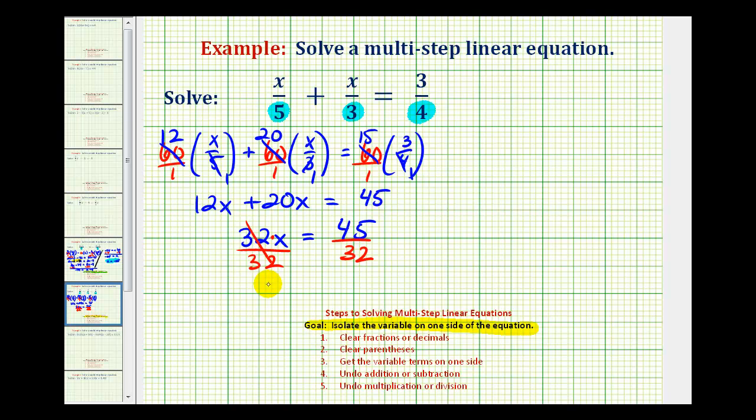So thirty-two divided by thirty-two would be one. We have one times x, or just x, equals forty-five over thirty-two, which does not simplify. So we'll leave it as an improper fraction.